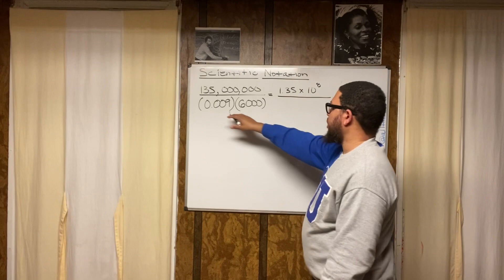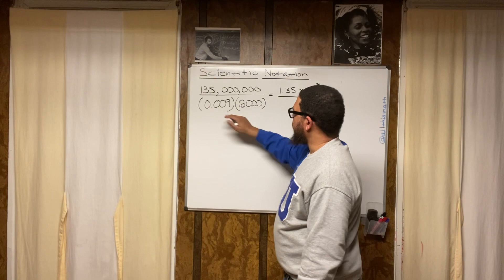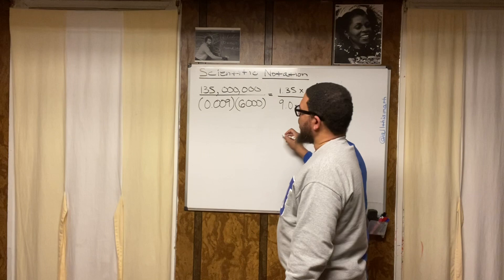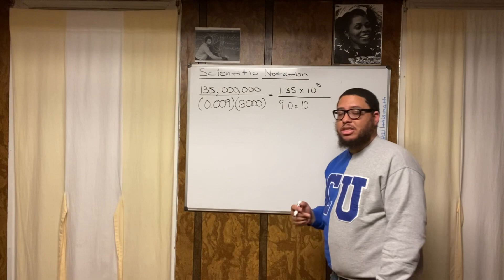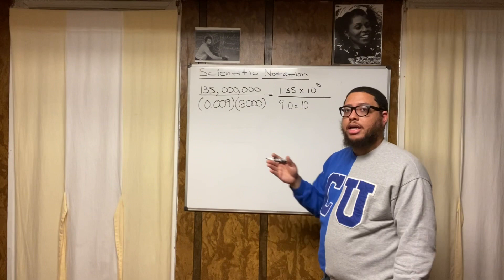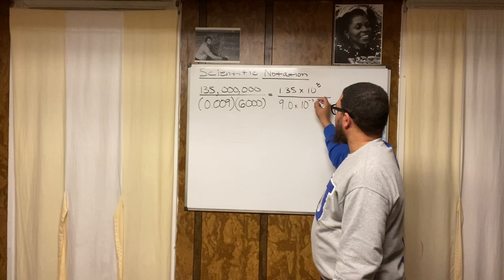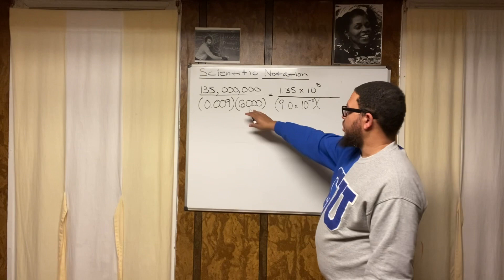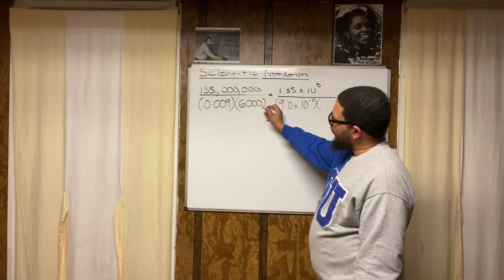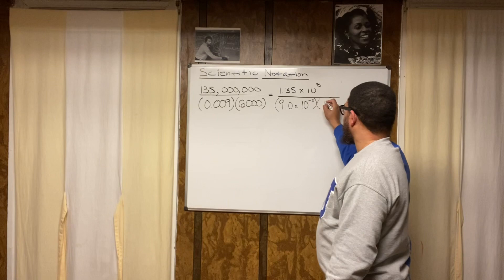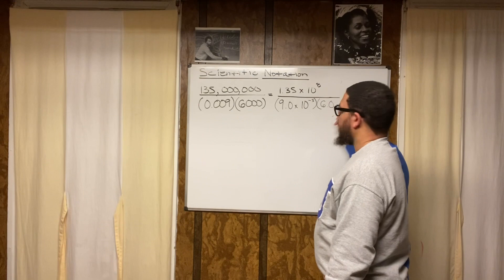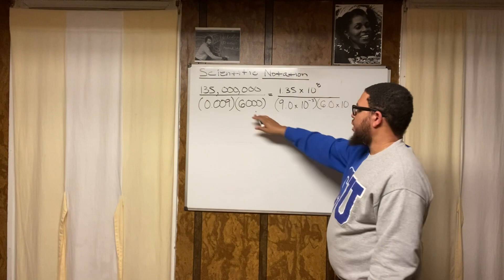Now for the denominator: for 0.009, I move the decimal point 3 spaces to get 9.0 times 10. To get back to the original number, I'd have to move left — toward the negative numbers on the number line — so the exponent is negative 3: 9.0 times 10 to the negative 3. For 6,000, there's an invisible decimal point at the end, so I move it 3 spaces to get 6.0 times 10 to the third — positive 3, because I'd move right to get back to 6,000.